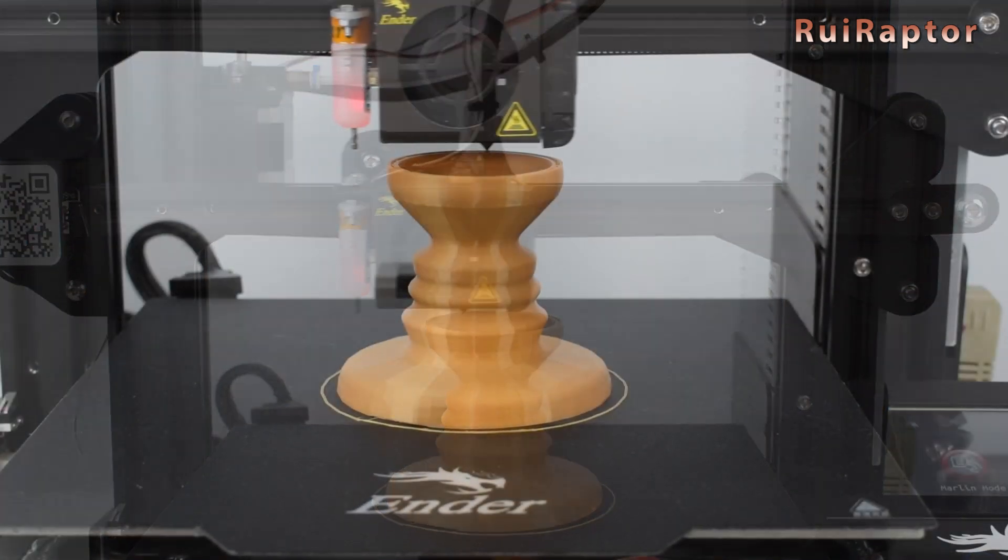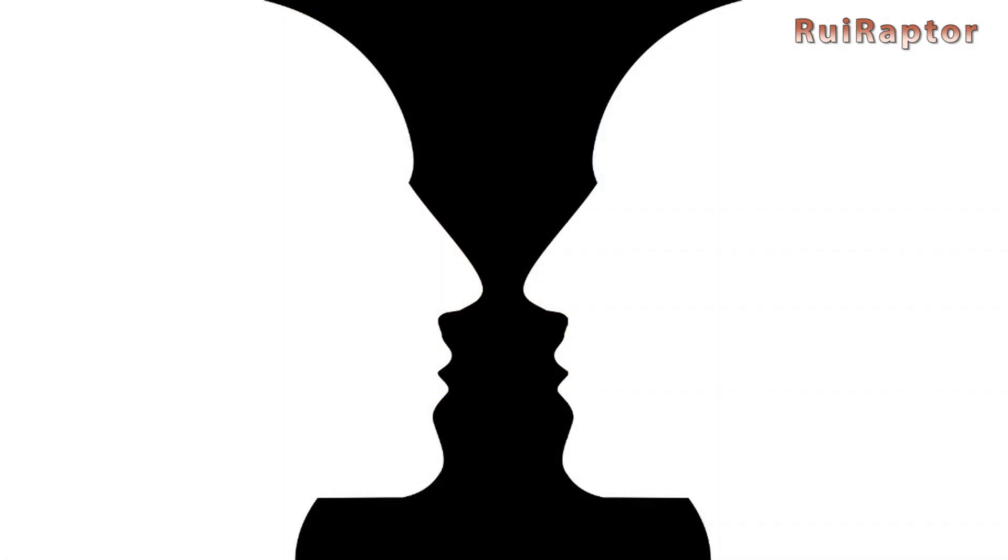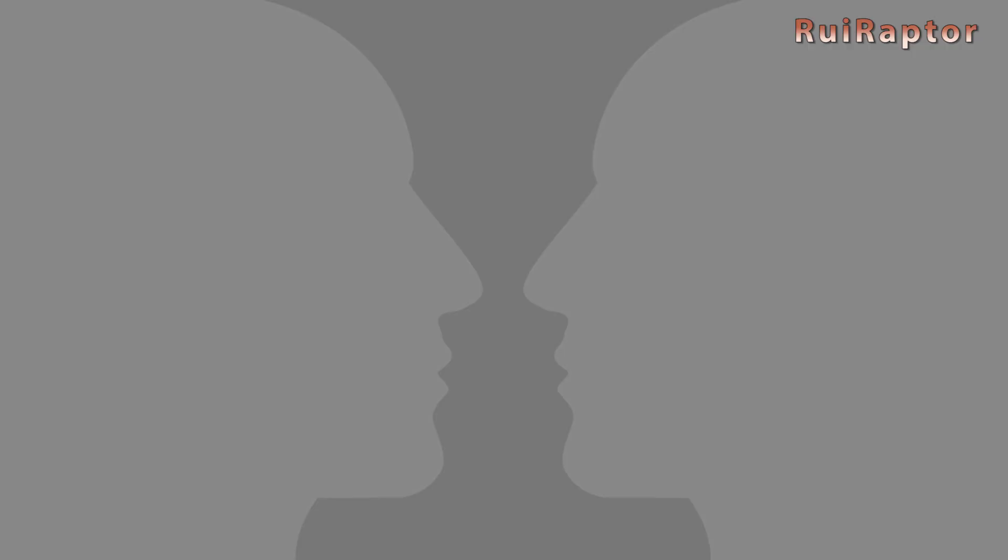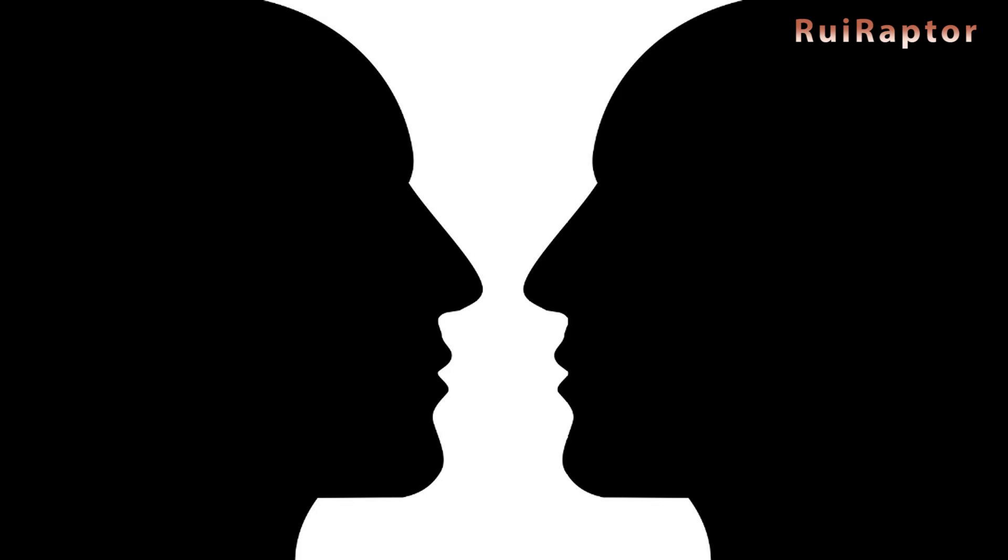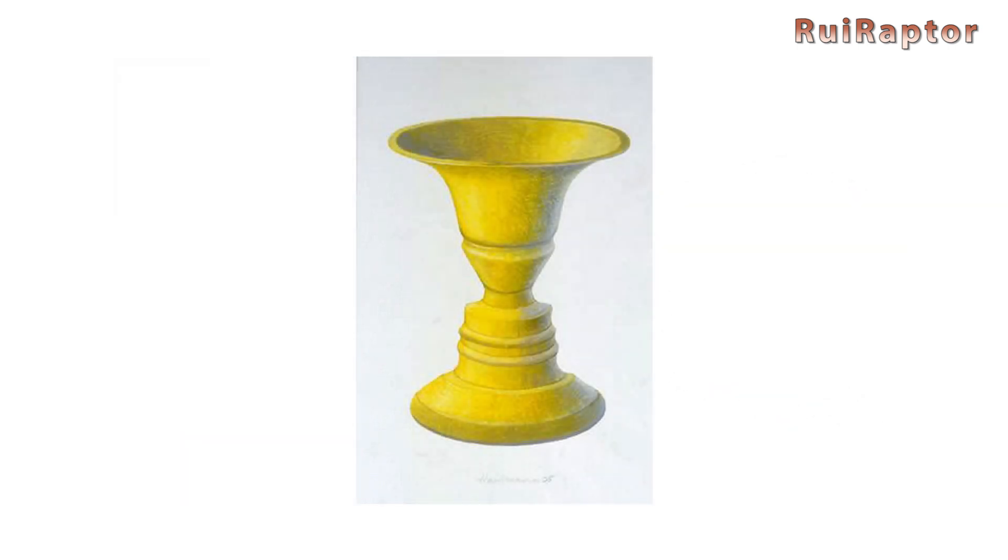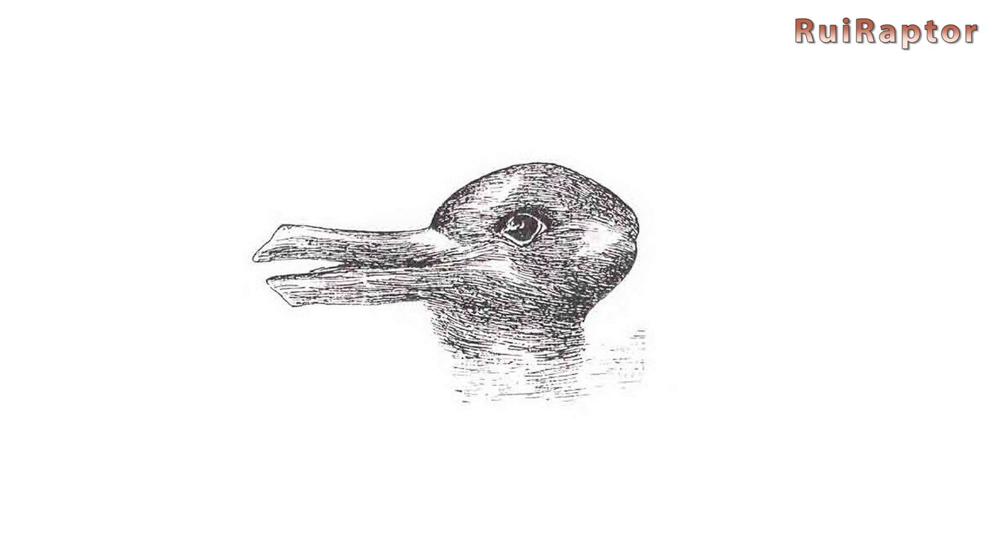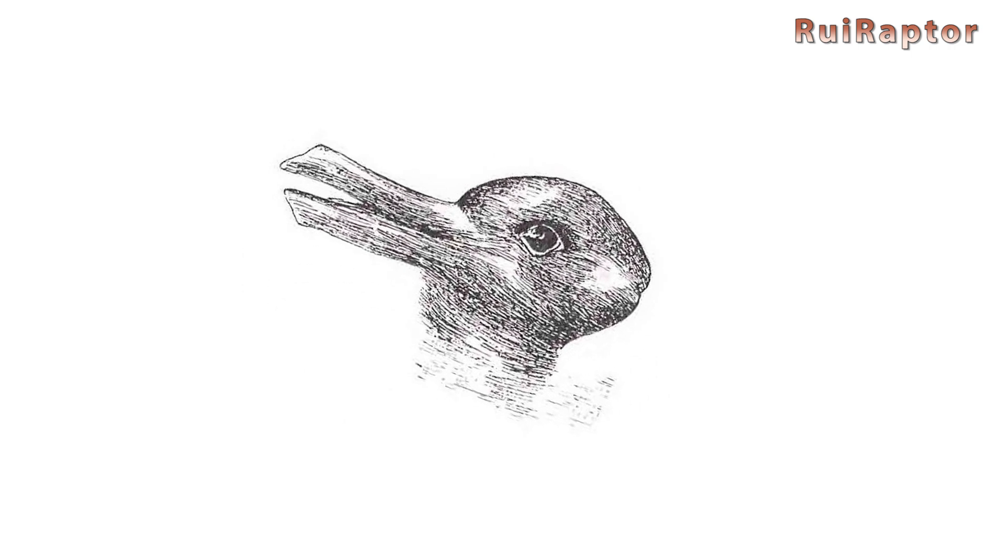A well-known type of optical illusions are the ambiguous or reversible images. These illusions allow a mental choice between two valid interpretations. Popular examples are the Rubin Vase and the Duck Rabbit. On the Rubin Vase, you can see the silhouette of a vase or the silhouette of the profile of two faces. And in this illustration, you can see a duck or a rabbit.